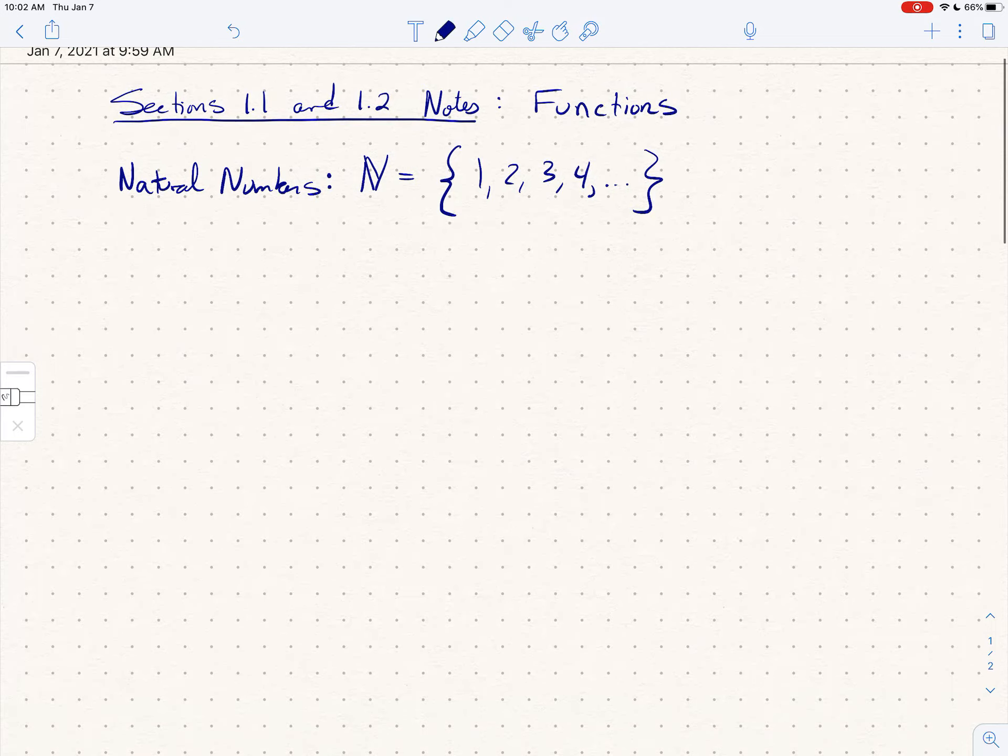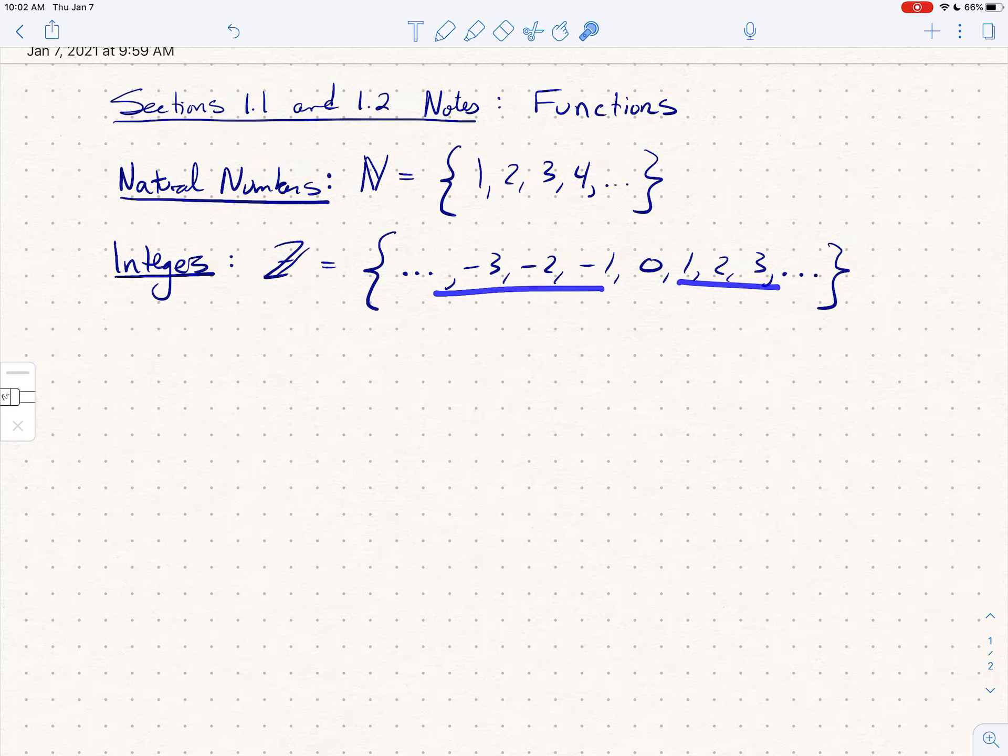I'm not going to write that down for our purposes. The next set that we care about is the integers. So the integers we usually denote by Z, and this would be the set of all the naturals, throw in zero, throw in the negatives. So we'll write that: dot dot dot, negative 3, negative 2, negative 1, 0, 1, 2, 3, so on and so forth. Okay, so the naturals are just the positives starting at 1, the integers are the naturals, their negatives, and 0.